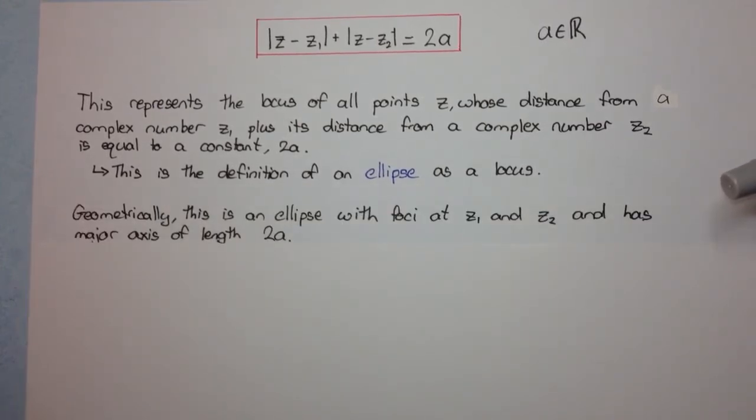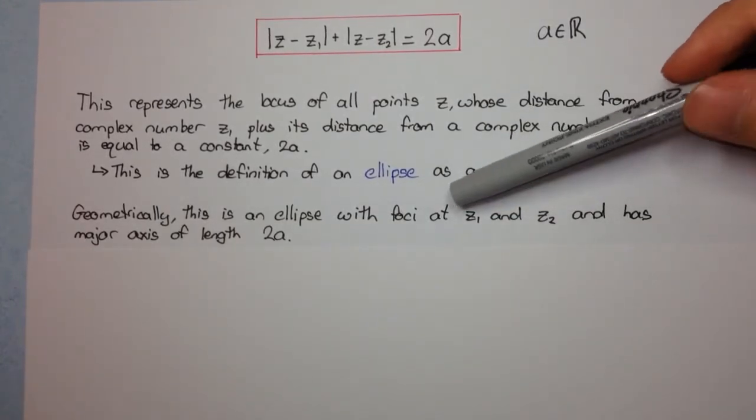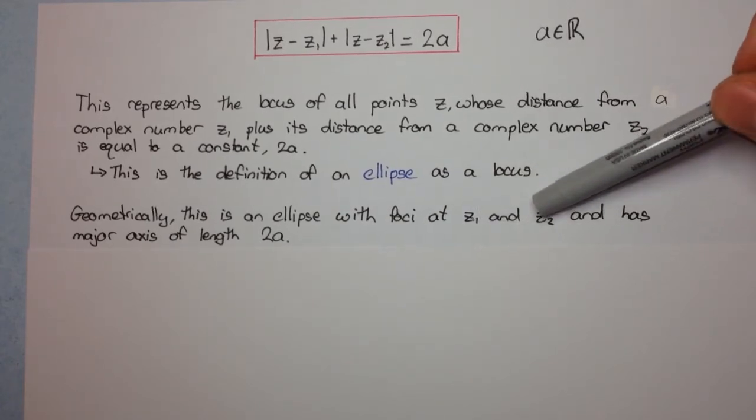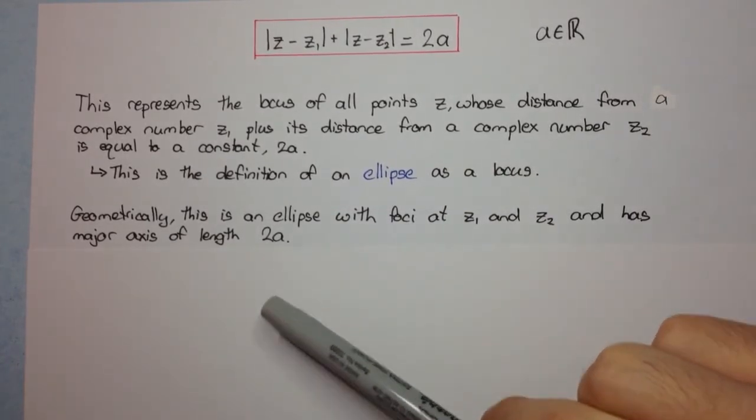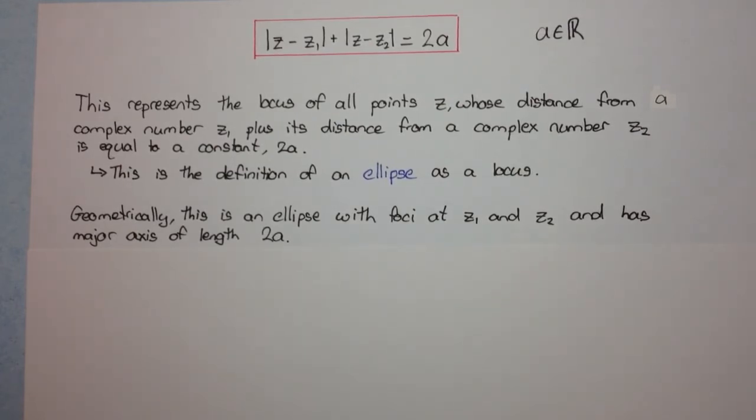Now geometrically, this is what we just said, this is the ellipse with foci at z₁ and z₂ and has a major axis of length 2a. Now some of this terminology might not mean much to you because you might not have studied conic sections yet, but don't worry, when we learn about conic sections, it's probably a good idea to come back and revisit this video and the video in which we do an example of this type because then you'll fully understand what we're talking about.